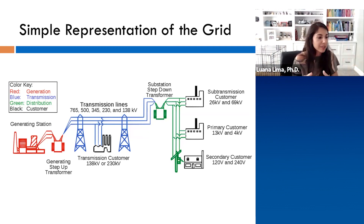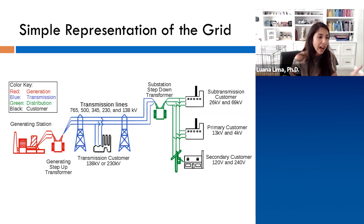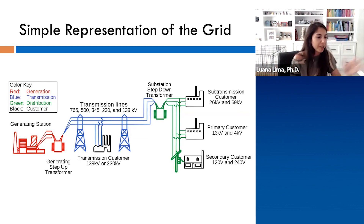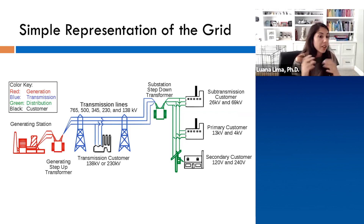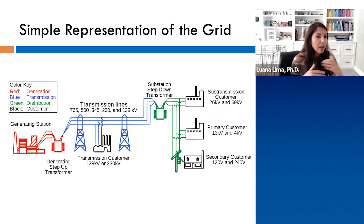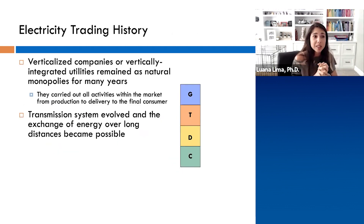I'm okay with students asking questions right away rather than keeping all questions to the end, since this is content-heavy material. Some large consumers like industry can connect directly to the transmission system — you can see the 'transmission customer' on the diagram — but usually only the very largest consumers have that option. Consumers like us need to connect to the distribution system.